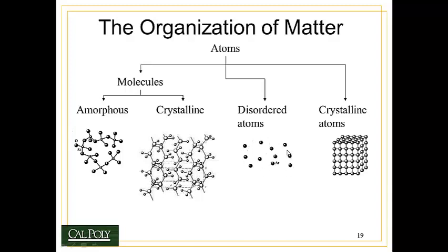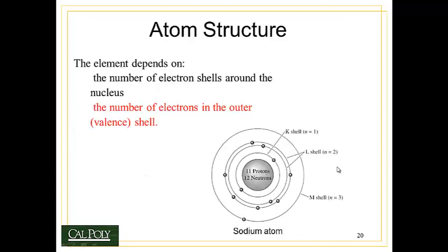An example of amorphous atoms would be argon gas, where all the individual atoms are spread out and randomly oriented. And lastly, we could have individual atoms organize themselves into a crystal. There are bonds here, but those bonds don't form molecules, so the atoms act individually. We'll talk a lot about crystalline atoms throughout the class this quarter.